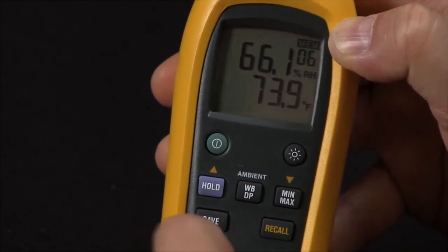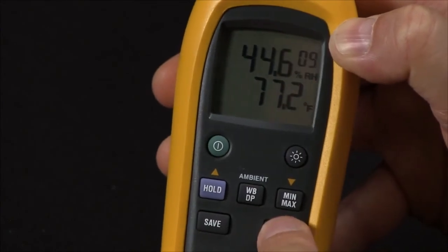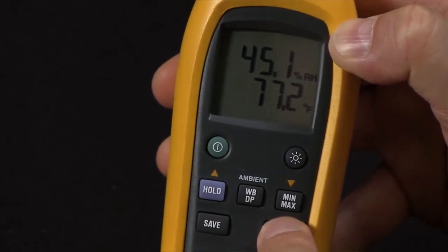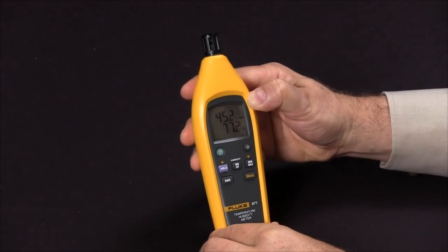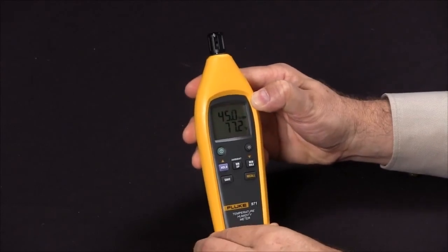To exit this mode, simply hold down the recall button to go back to a live measurement. And these are the key features of the Fluke 971 temperature and humidity meter.